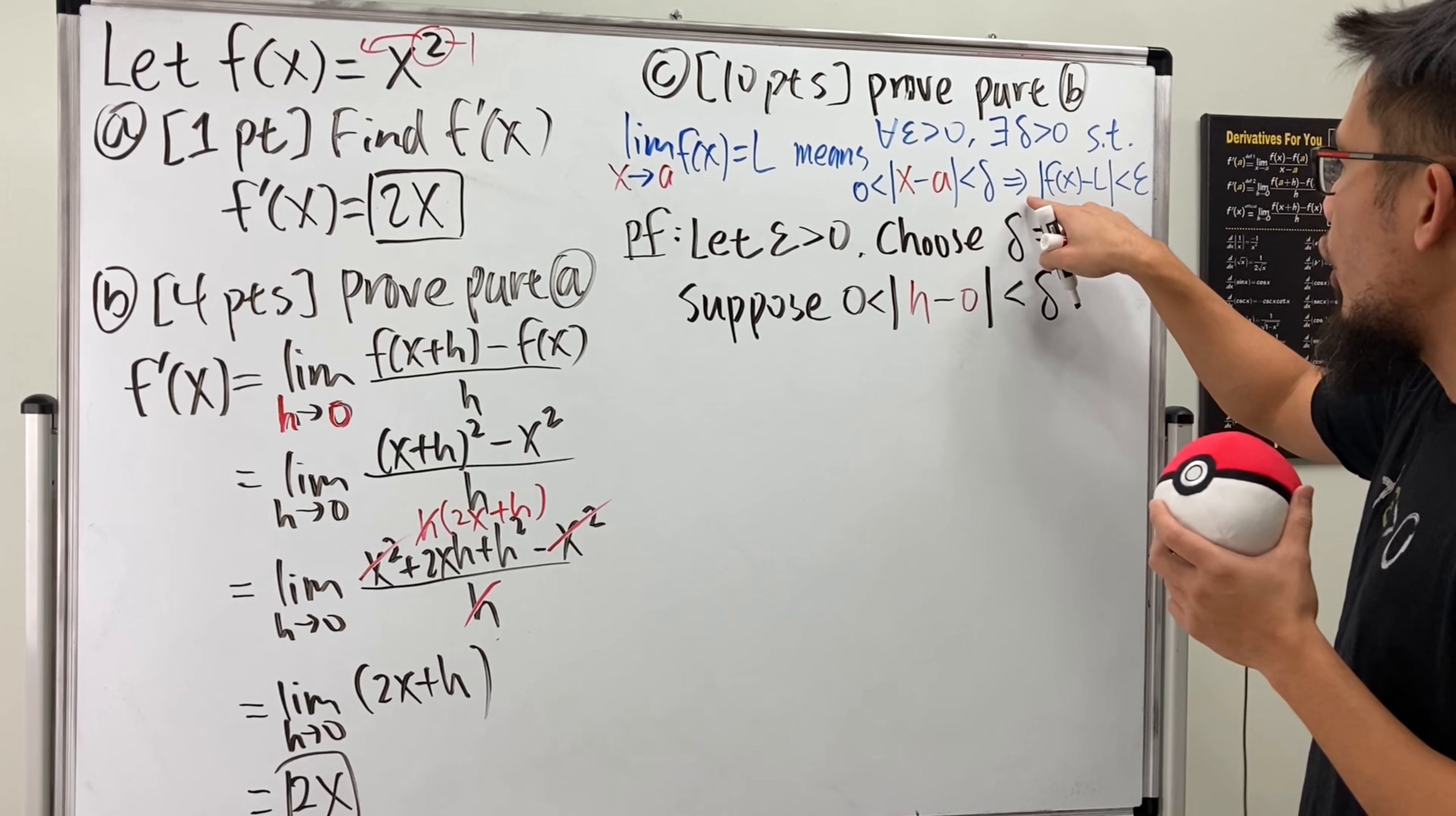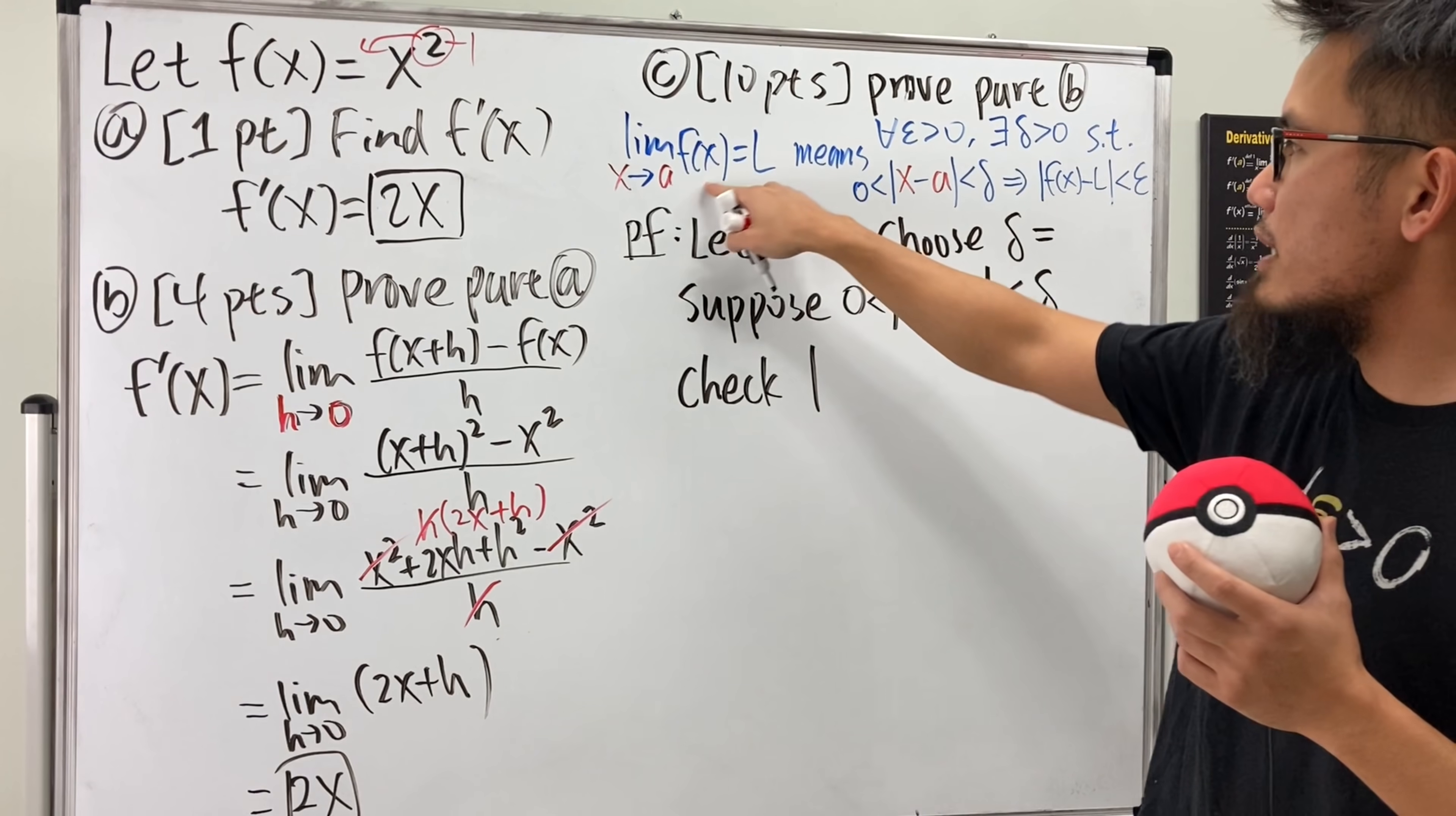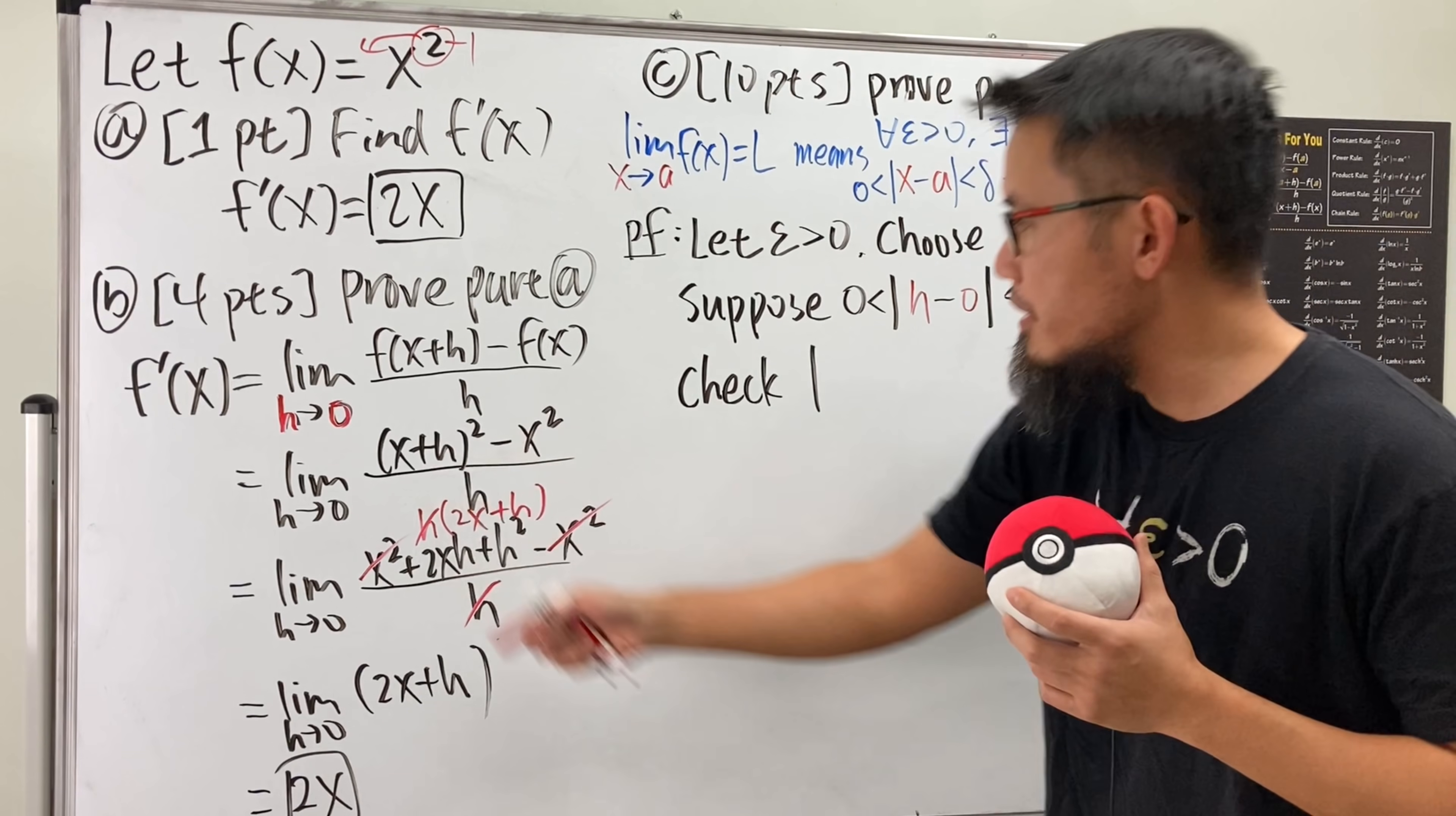Then, we hope to show that this is also true, right? So I like to use the word check. So we're going to check the inequality, function minus L, right, f(x) minus L, and in our case, we are looking at this as our function part, right, this whole thing, and then the L is our output, right, the outcome, which is the 2x. So let me just copy this down inside.